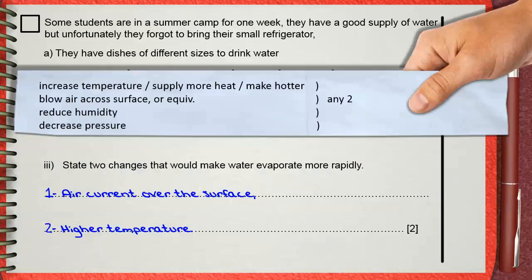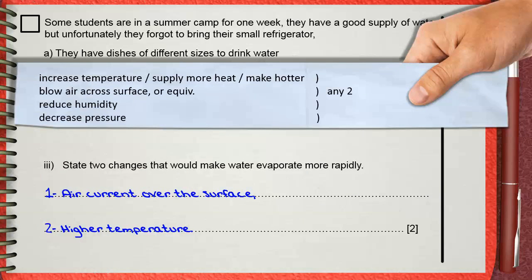The mark scheme gives other options. You can say any two of: increasing temperature or supply more heat, or make it hotter. This is one mark. Blow air across surface, or anything equivalent to that meaning. You can say reduce humidity. This will cause faster evaporation. The last thing to say is to decrease pressure. Any two of these will deserve the two marks of the question.